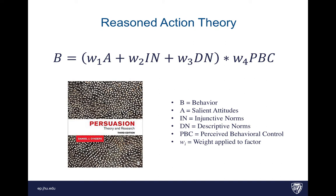Basically, people have attitudes — things that they like, dislike, beliefs that they have — and that's going to affect how they interpret stimulus and make decisions. There are also norms: how do the opinions, values, and judgments of important people and peers affect decision making?